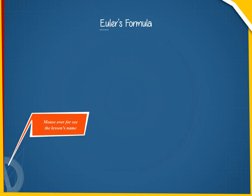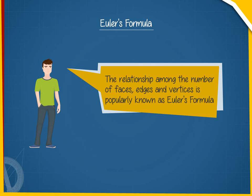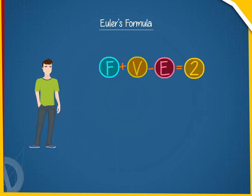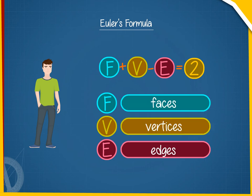Euler's Formula describes the relationship among the number of faces, edges, and vertices of a polyhedron. It states F plus V minus E equals 2, where F, V, and E stand for faces, vertices, and edges respectively.